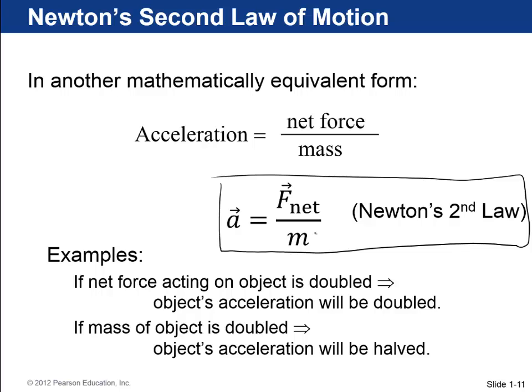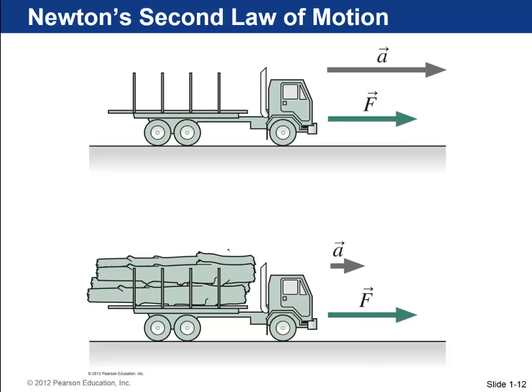However, if you keep the same net force and you just double the mass of an object, that's going to cut down the acceleration by a factor of two. The way they show it in the book is if you have an empty truck and you exert some particular force on it, it's going to accelerate at some sort of large rate. But if you fill up the truck, increase its mass, and apply the same force, its acceleration will be less.